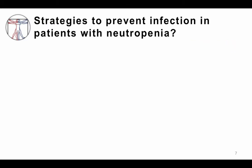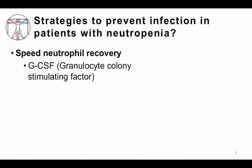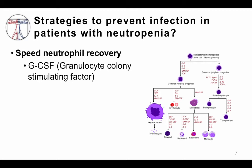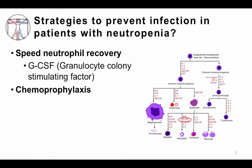What are some strategies to prevent infection in patients with neutropenia undergoing cancer treatment? You can try to speed their neutrophil recovery by giving granulocyte colony-stimulating factor, or GCSF. As you may recall from hematopoiesis, GCSF is a normal factor made in humans that stimulates neutrophil production, and we replicate that to speed recovery. Chemoprophylaxis — giving antibacterials or antifungals to prevent infection — has also been shown to be very efficacious in patients with poor immune systems.